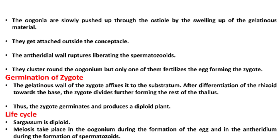Germination of zygote. The gelatinous wall of the zygote affixes it to the substratum. After differentiation of the rhizoid towards the base, the zygote divides further, forming the rest of the thallus. Thus, the zygote germinates and produces a diploid plant.